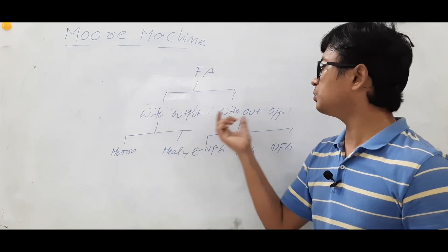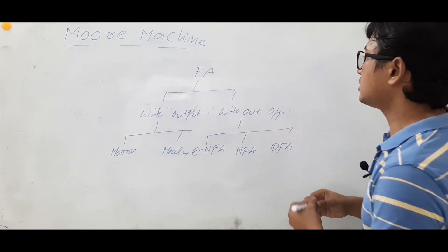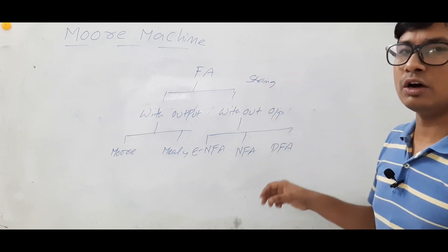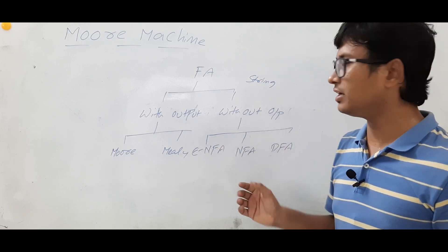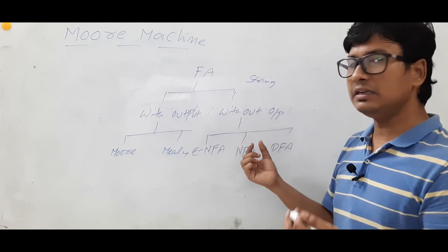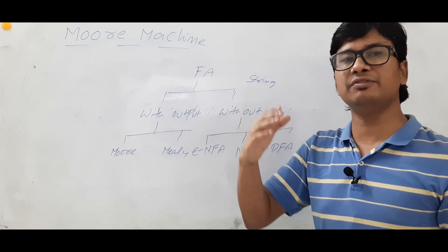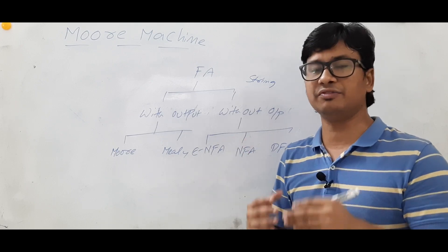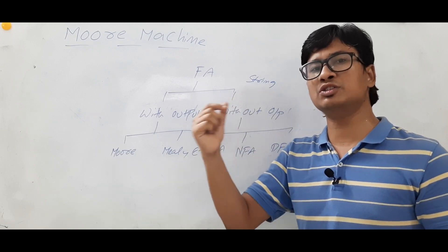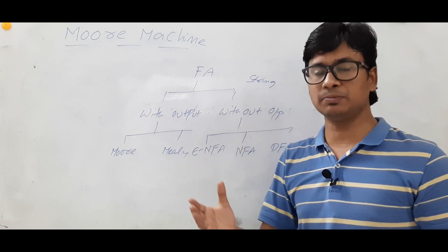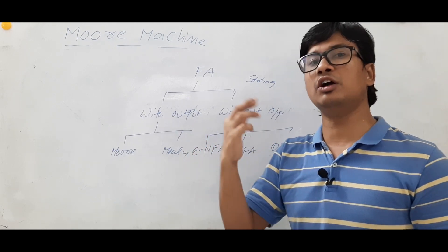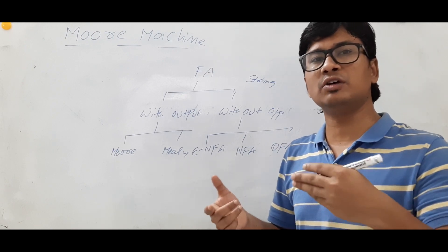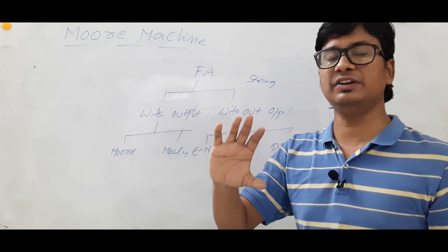What is the basic difference between with-output and without-output machines? If you give any string which belongs to a language L, the machines without output — NFA, DFA, or epsilon NFA — will say whether the string is accepted or not. For a given language we construct an NFA or DFA, then we take a string belonging to that language and our machine should accept it; otherwise it should not accept it. So they are just acting as acceptors or non-acceptors.